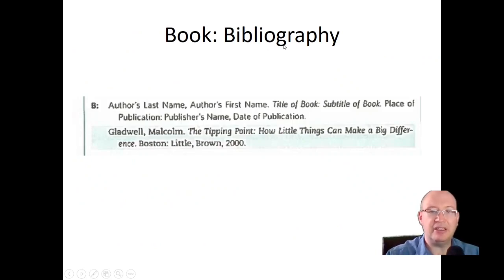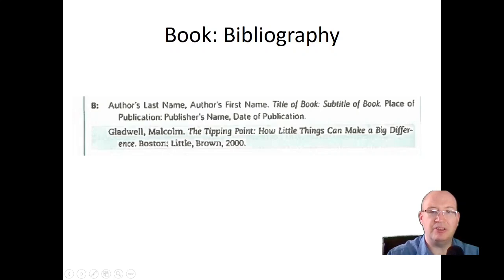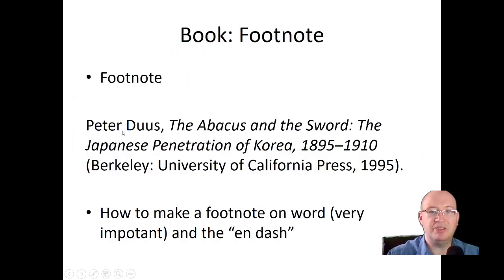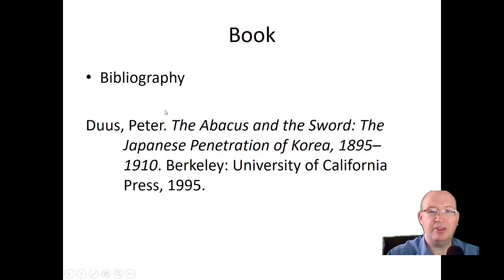Now for the bibliography — the section that goes at the end — it's a little different. It's the author's last name first, comma, then first name. Then the title of the book in italics, colon, subtitle, place of publication, comma, publisher's name, comma, date of publication — not in parentheses. So it would be: Gladwell, comma, Malcolm, then the title, place of publication, publisher, year, no parentheses. Commas become periods in the bibliography, and notice it's indented. For the Deuce book: Deuce, Peter. 'The Abacus and the Sword: The Japanese Penetration of Korea, 1895–1910.' Berkeley: University of California Press, 1995. Very simple — just plug in the information correctly. If you have a model, you just follow it.